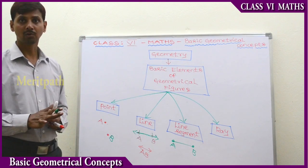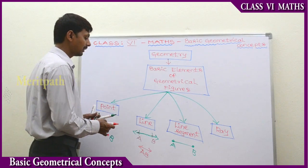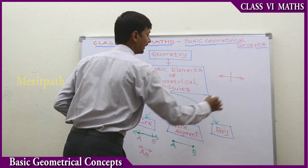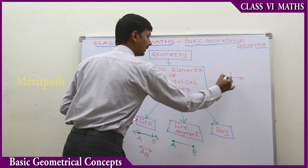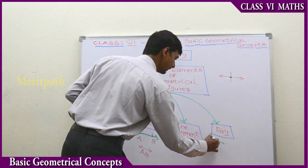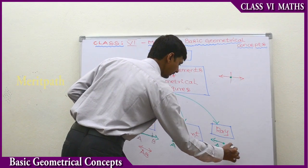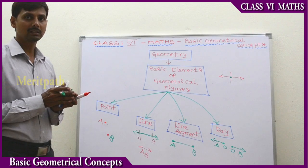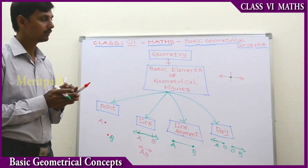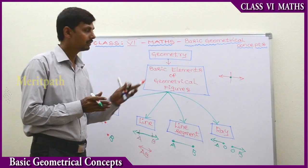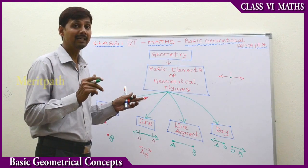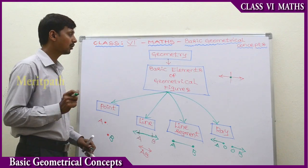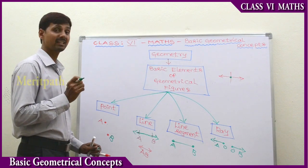A ray is also a part of a line. When we cut a line into two parts, each part is called a ray. For example, one part is OE and the next part is OV, so two rays are formed when we cut a line. A ray has one end point, and it extends endlessly in one direction on the other side.